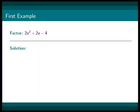In our first example, we factor the expression 2 times x squared plus 2x minus 4. We will first factor out the common factor of 2.